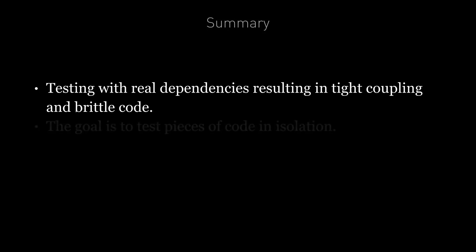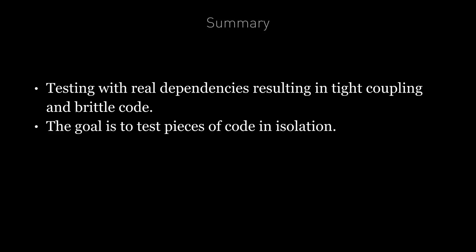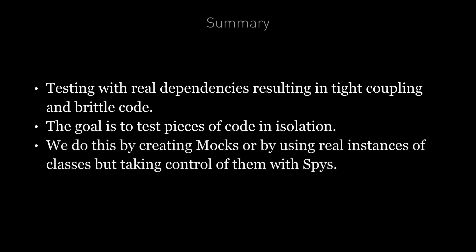To summarize: testing with real instances of dependencies causes our test code to know about the inner workings of other classes, which results in tight coupling and brittle code. The goal is to test pieces of code in isolation without needing to know about the inner workings of their dependencies. We do this by creating mocks — using fake classes, by extending existing classes, or by using real instances of classes but taking control of them with spies.